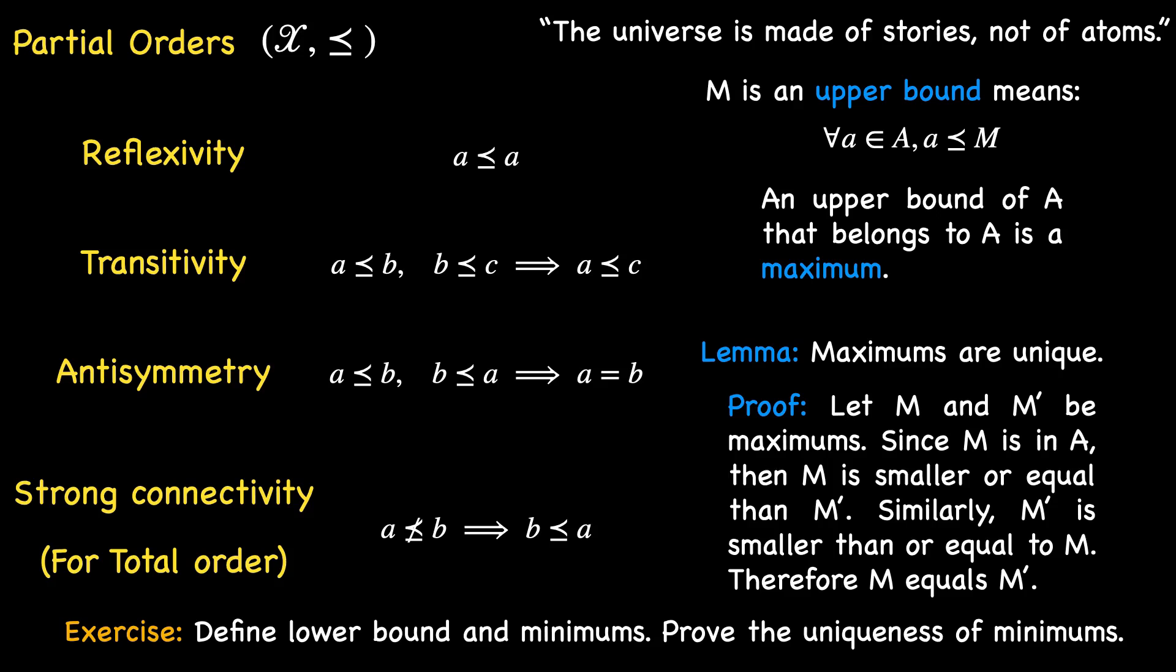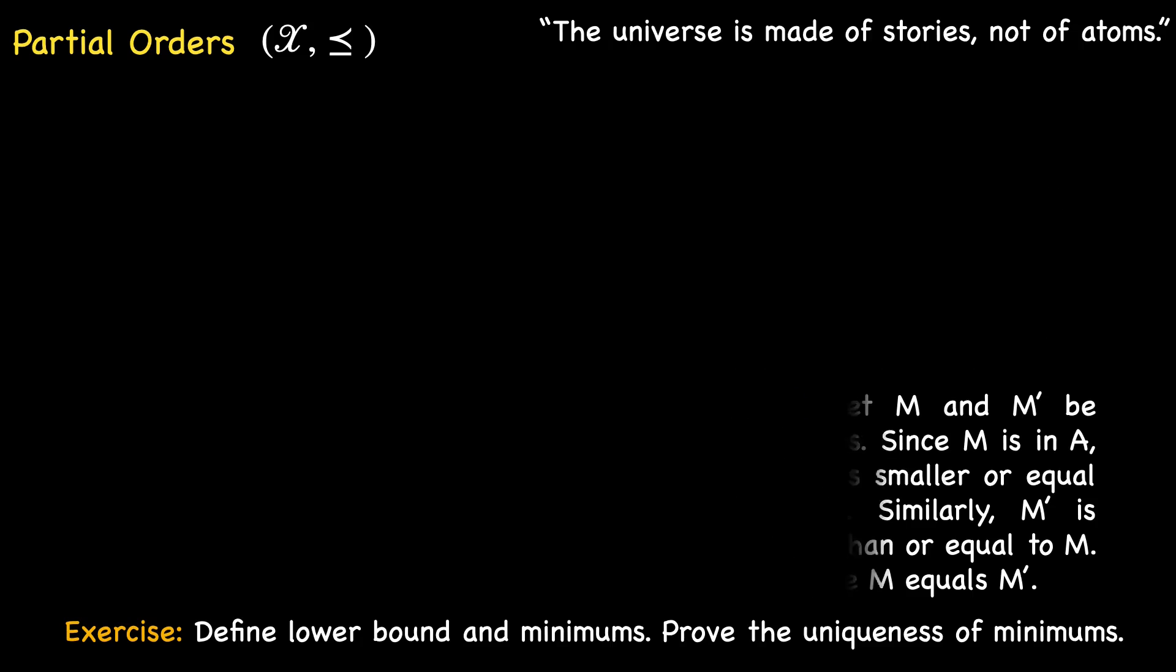Not every subset of rational numbers is either upper or lower bounded. Take the integers as a subset of rational numbers. They lack both upper and lower bounds. For every integer, there exists a rational both larger and smaller.